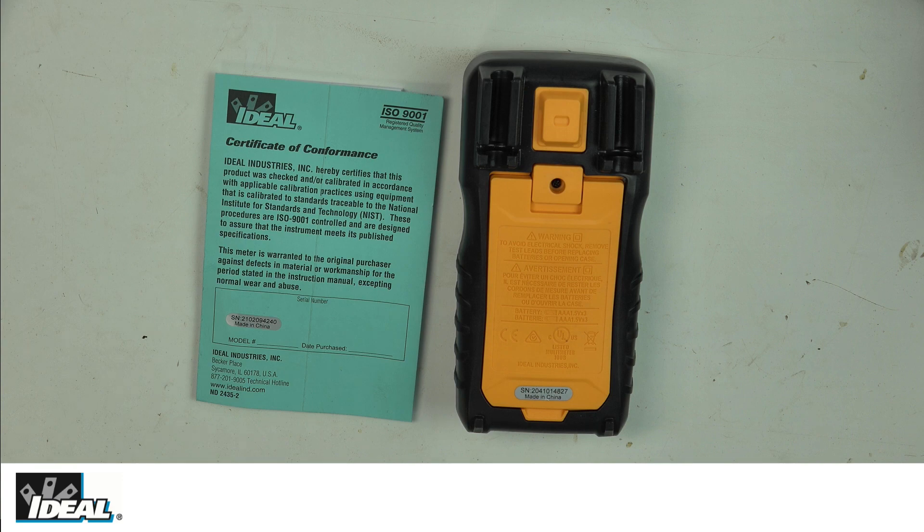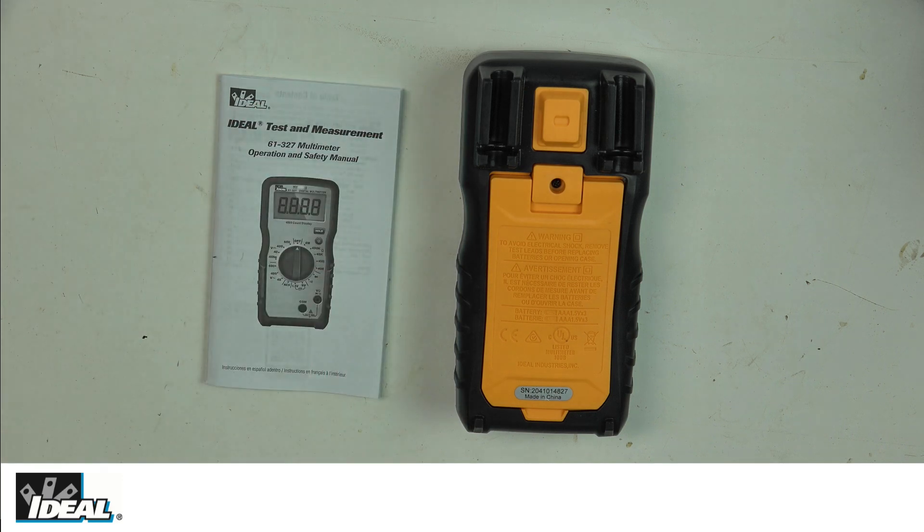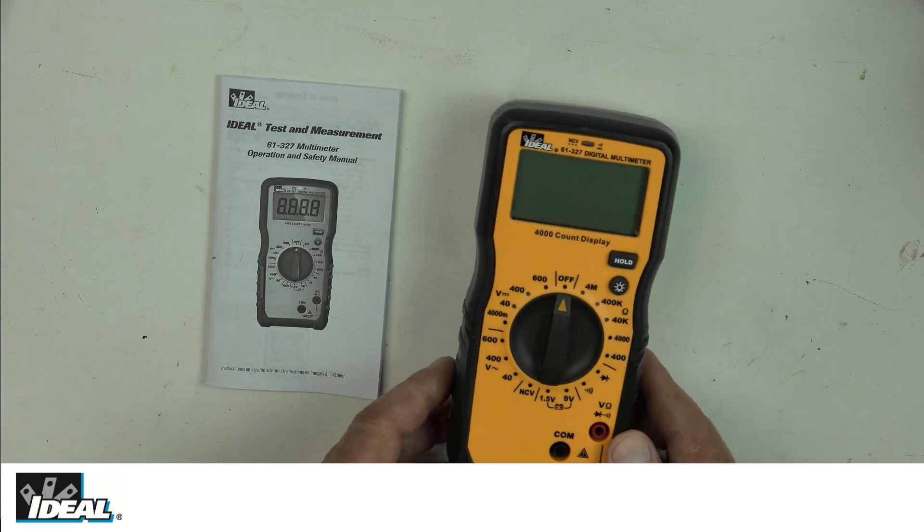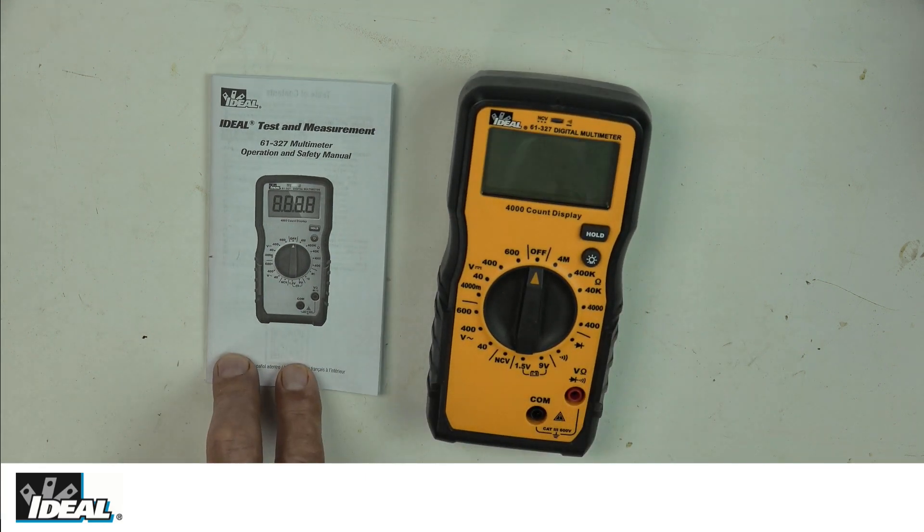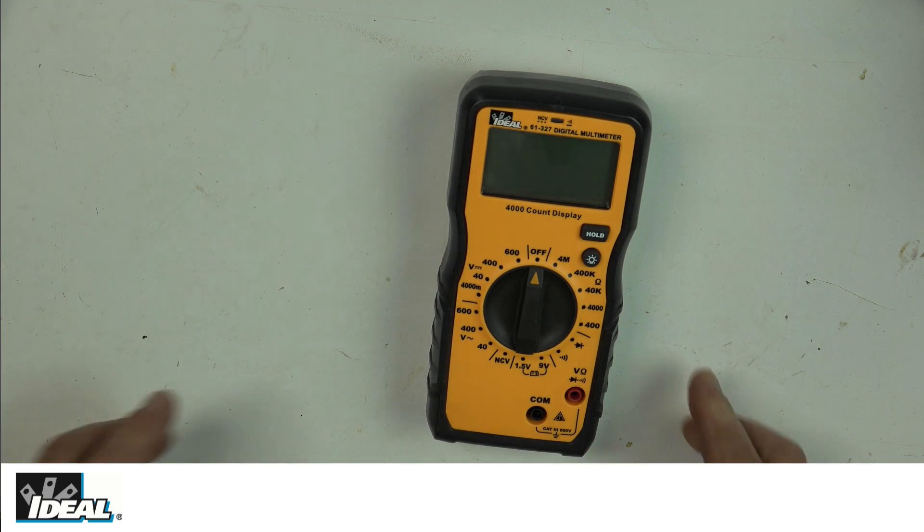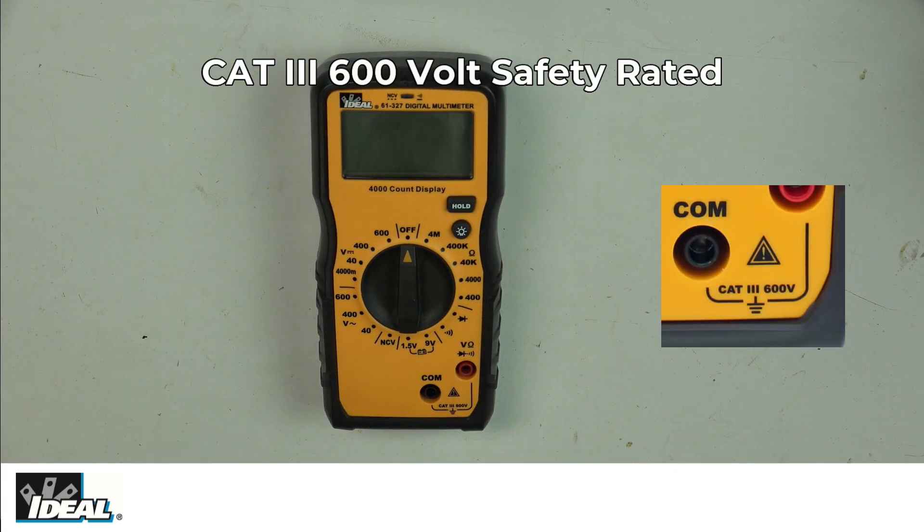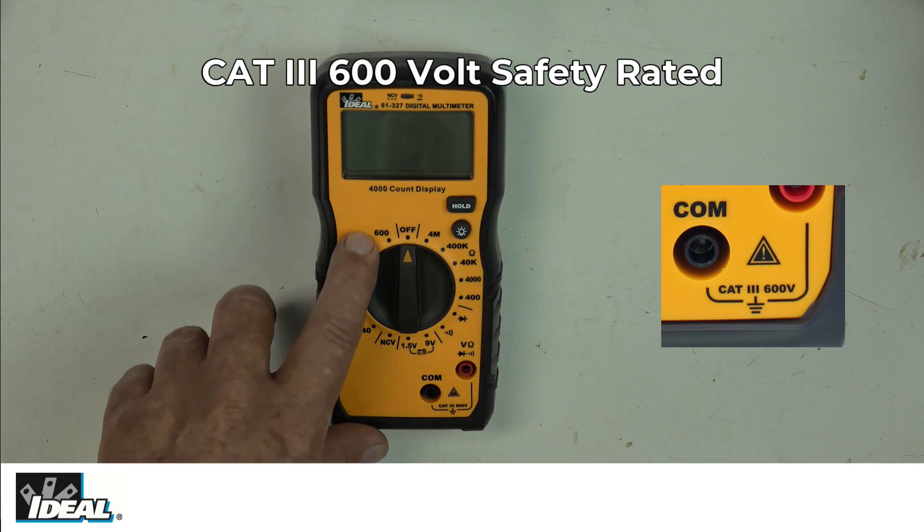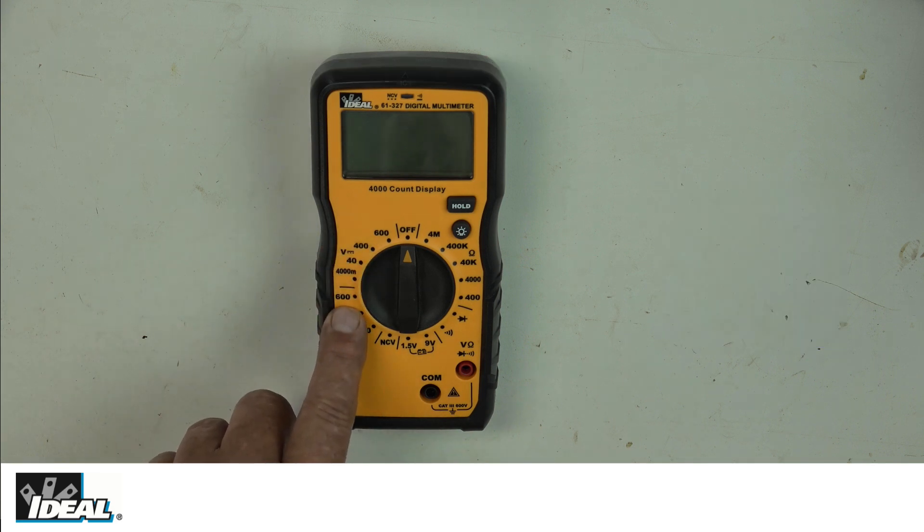You'll also get a manual - please read and fully understand the manual before using the tester. I should point out a couple basic things. This is a Cat 3 rated tester, meaning it can be used safely in Cat 3 testing environments up to 600 volts DC or 600 volts AC.